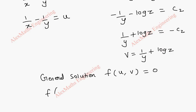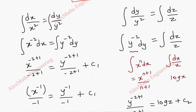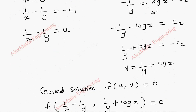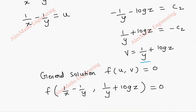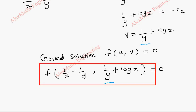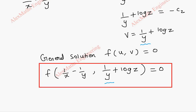So f of (1 by x minus 1 by y, 1 by y plus log z) equal to 0. In case we had taken the first and third pair instead of second and third, the result would involve the x term, but all such solutions are equally valid and correct. We have taken the second and third terms, and this is the general solution for the given partial differential equation.